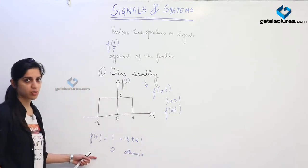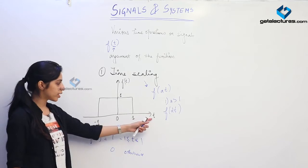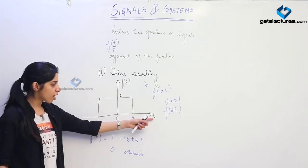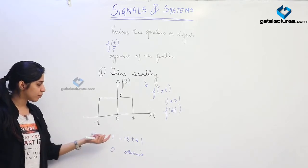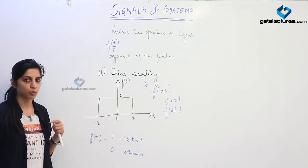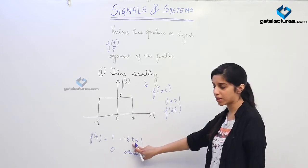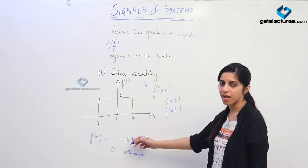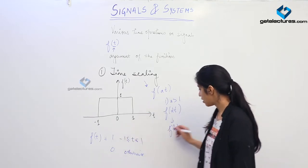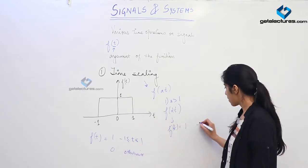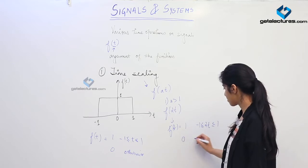Now I have made some changes to its argument. Whenever you try to plot a function, we are always going to have t only. So I want to express this function as a function of time only, not as a function of 2t. I make changes to its domain — the possible values of t for which the function is defined. This function is going to have value 1 when 2t lies between −1 and 1, and 0 otherwise. Since the argument is 2t, I just replace t with 2t here. To make the argument t again, I simply divide all the numbers by 2, which gives value 1 for t between −1/2 and 1/2, and 0 otherwise.